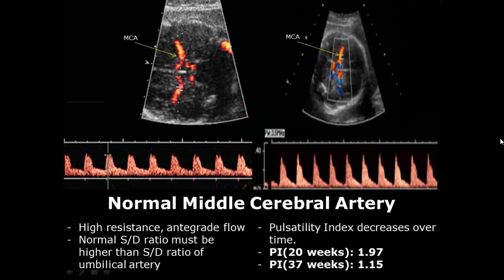The pulsatility index is another parameter used to measure blood flow resistance. It is also used to calculate the cerebral placental ratio and must decrease over time. For example, at 20 weeks the pulsatility index is approximately 1.97, and by 37 weeks it has decreased to 1.15.